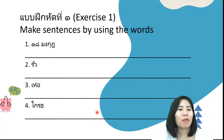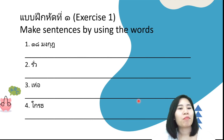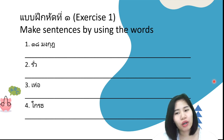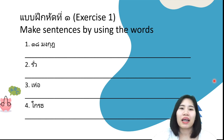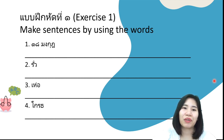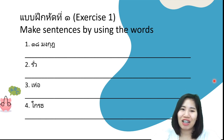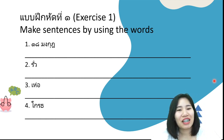การบ้านค่ะ — your homework: make sentences using these words, there are four of them. When you submit, I will give you feedback. If you have more questions, just email me or text me. See you next chapter! Bye-bye.